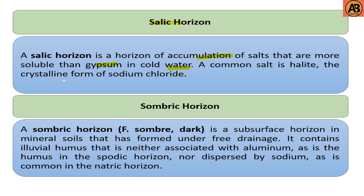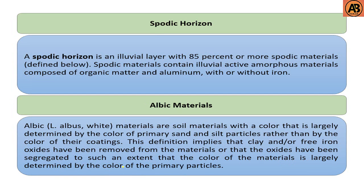The next one is the salic horizon. The salic horizon is a horizon of accumulation of salts more soluble than gypsum in cold water. A common salt is halite, the crystalline form of sodium chloride. The sombric horizon — sombre meaning dark — is a subsurface horizon in mineral soils that has formed under free drainage. It contains illuvial humus that is neither associated with aluminum as in the spodic horizon, nor dispersed by sodium as is common in the natric horizon. The next one is the spodic horizon, an illuvial layer with 85 percent or more spodic materials containing illuvial active amorphous materials composed of organic matter and aluminum with or without iron.